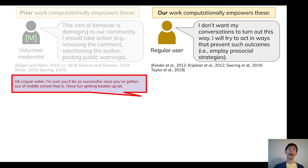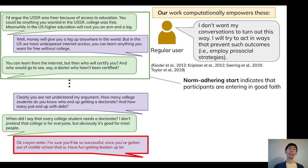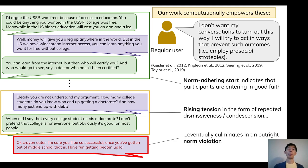To better understand why, it might help to consider an example. Let's consider the conversation that this comment came from, which took place on a debate forum. We observed that the conversation starts as a reasonable debate, which indicates that the participants entered in good faith. Nevertheless, as the conversation develops, we start to observe rising tension in the form of repeated dismissiveness and condescension, which eventually culminates in that comment we saw earlier.